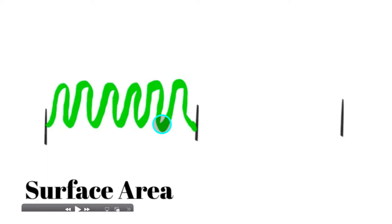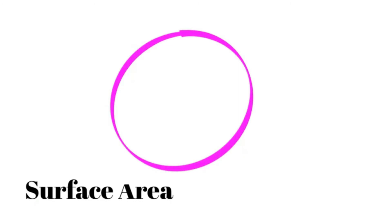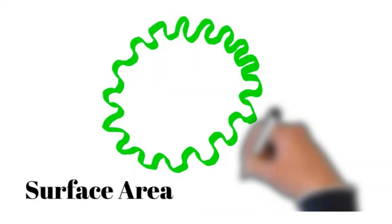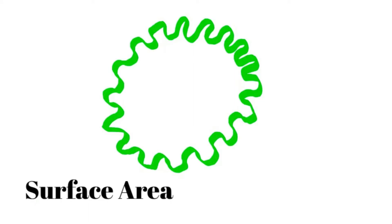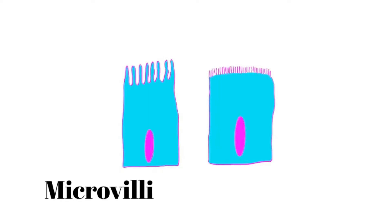We've seen surface modifications with cells throughout the body. If we have a cell, around its perimeter is the extent of its surface area. We're confined by cells of this size, but we can increase surface area by creating undulations or wave-like patterns in the plasma membrane. That cell theoretically has twice the surface area of the previous one just by creating these surface modifications. Looking at simple columnar epithelial cells, the apical surface has these undulations referred to as microvilli, whose whole purpose is to increase surface area of the apical surface.